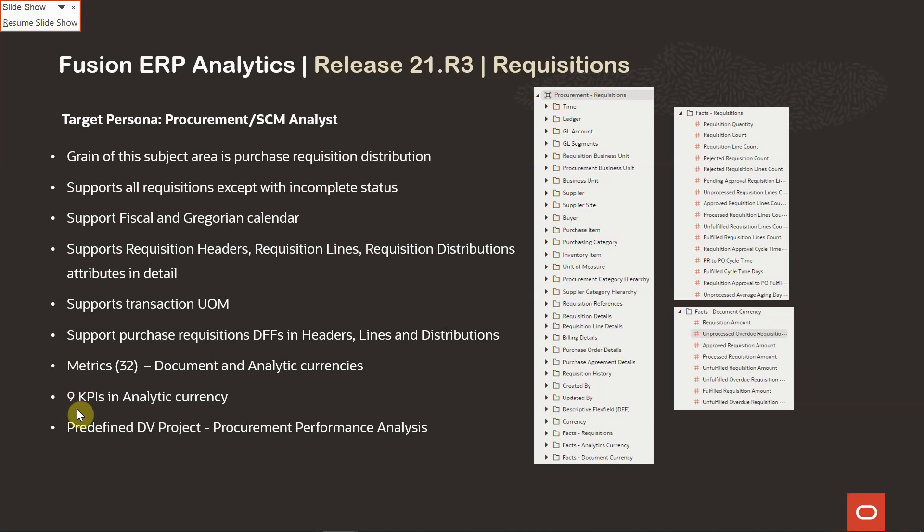We have added nine predefined KPIs in analytic currency to our KPI library. We also provided one out-of-the-box visualization project that summarizes the performance analysis from requisitions to receipt. This DV provides insights on past use, rejections, cancellations, and over-received quantity percent by different dimensions.